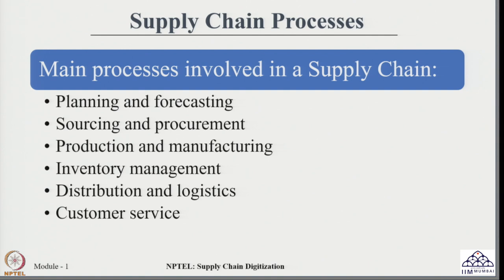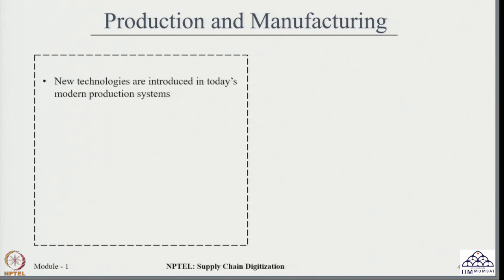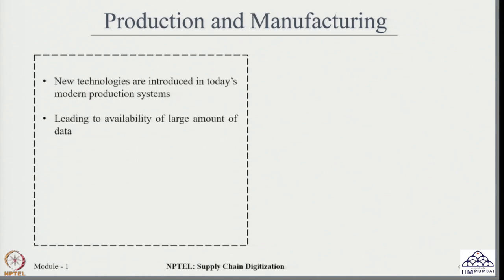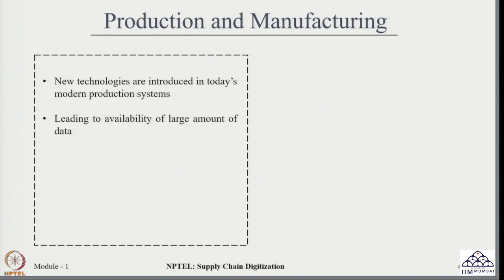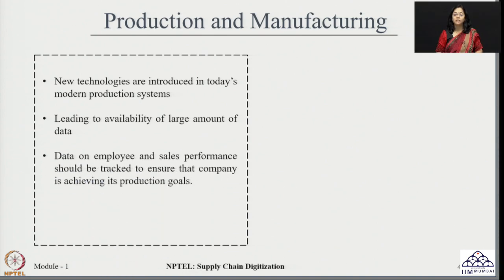In today's session, we will cover the remaining processes in detail. Let us look into the process of production and manufacturing and review what we have done in our previous session. We discussed the role of technologies in production and manufacturing, and how when we started using technologies in our production and manufacturing processes, this led to a large amount of data which needs to be analyzed for proper decisions.